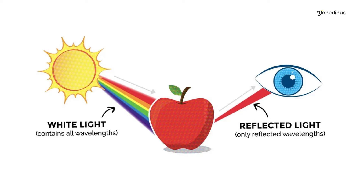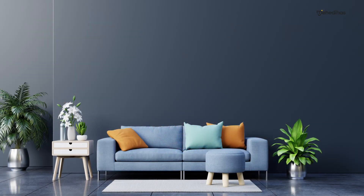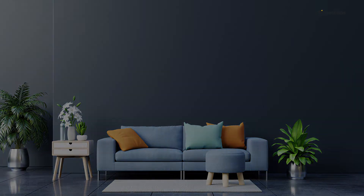When you have a color or light, you can reflect the light — that's how you see color. For example, when you cut power, you can't see color. Why? Because without light there is nothing to reflect, so the color is not visible.